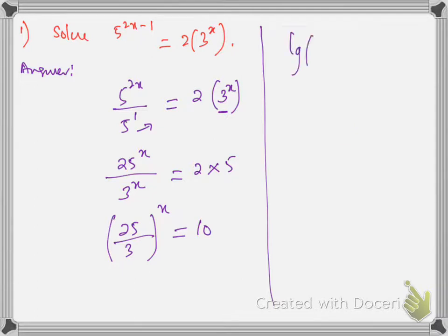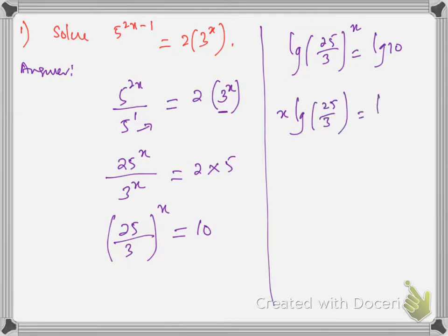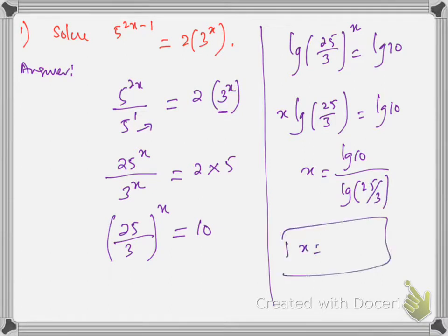Now we should use log on both sides to get the value of x. By using LG on both sides, we have x · LG(25/3) = LG 10. And finally, x = LG 10 / LG(25/3). By using the calculator, we can get this value to 3 significant figures. This is the way to solve these type of equations.